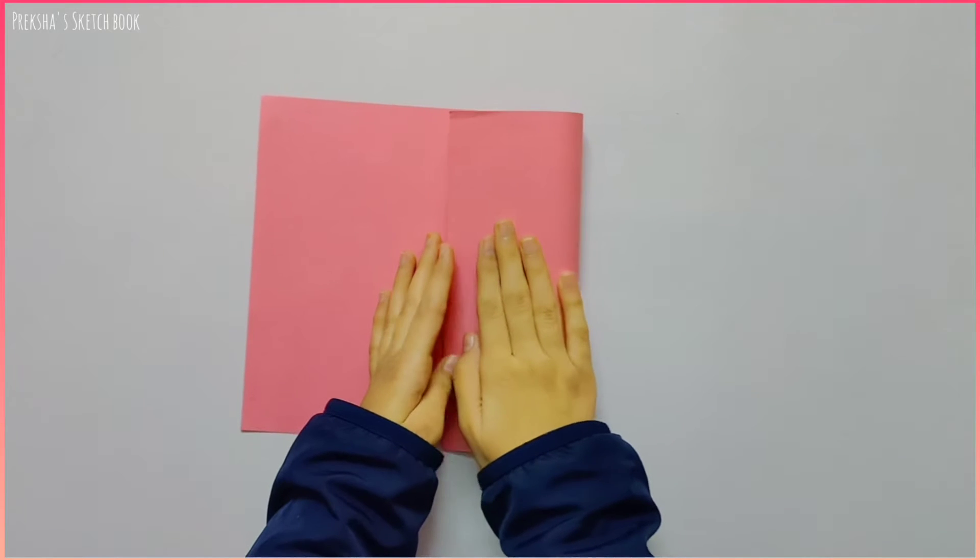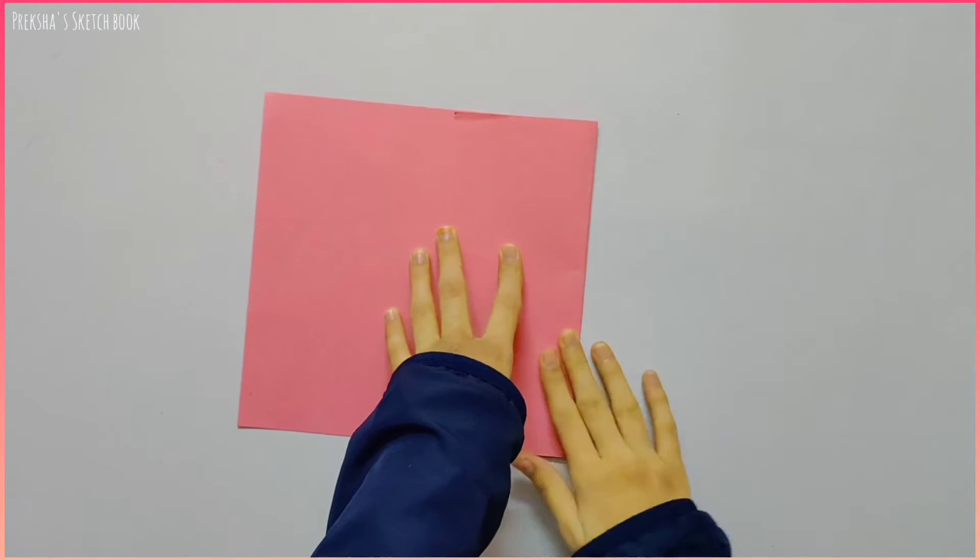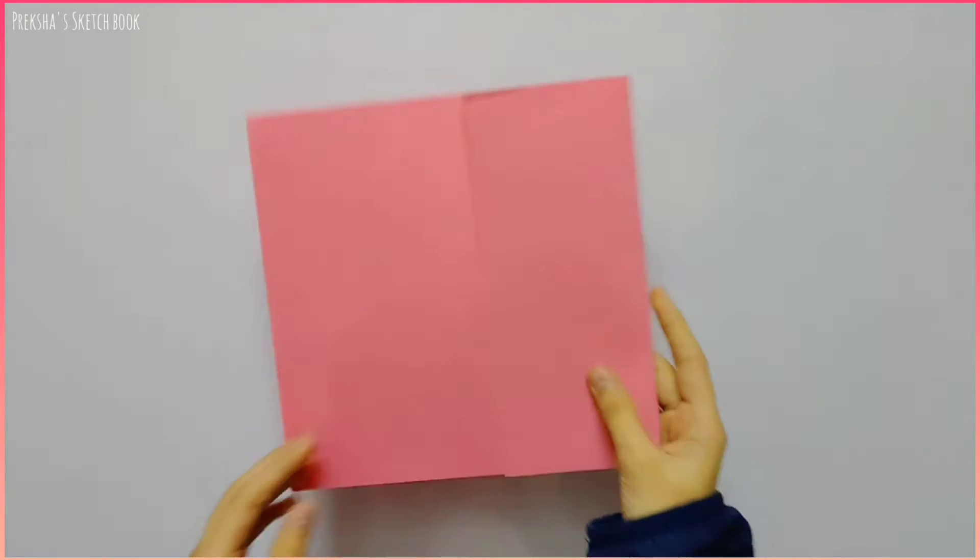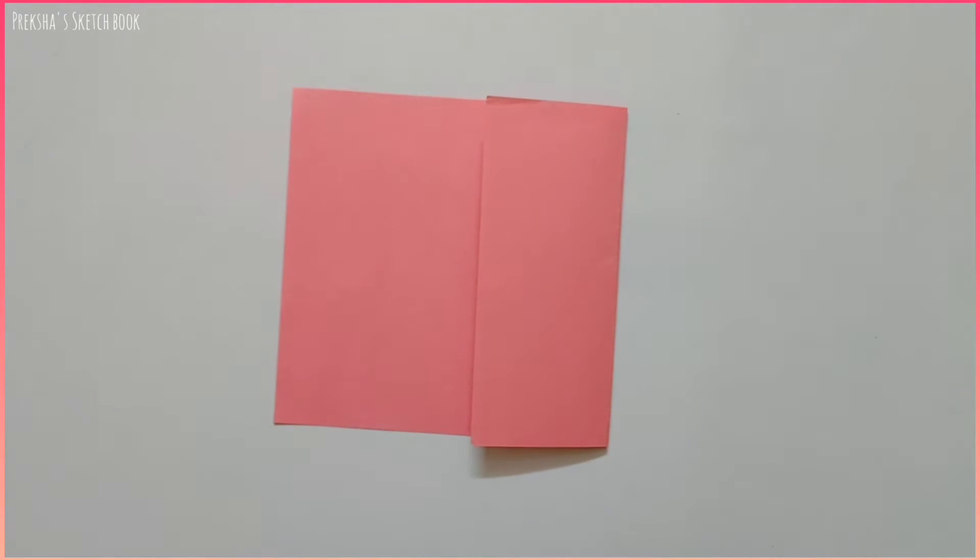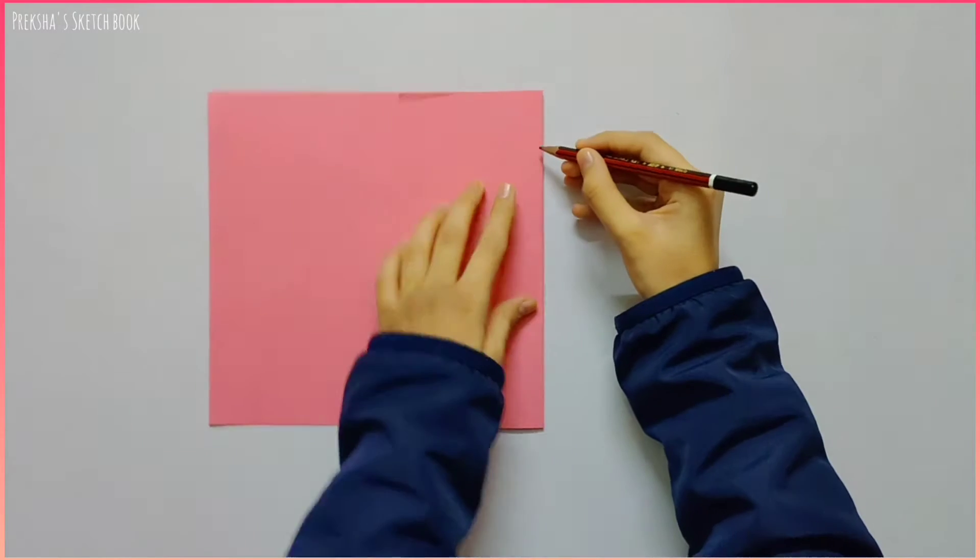First of all, what we'll do is fold your sheet like this, exactly not in half, because then the butterfly will be too big. Now I will tell you how to sketch one wing out of the butterfly.